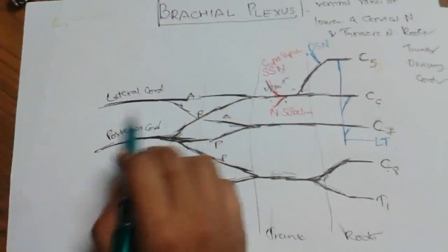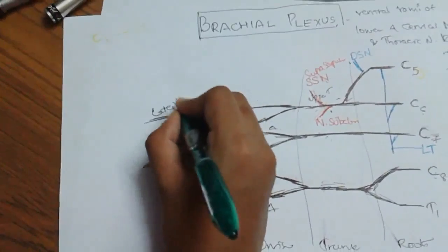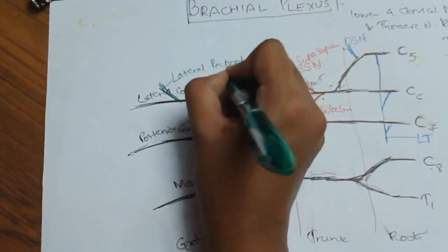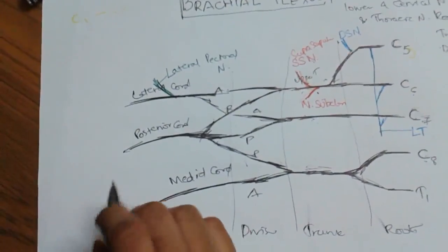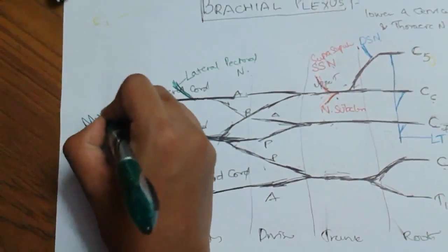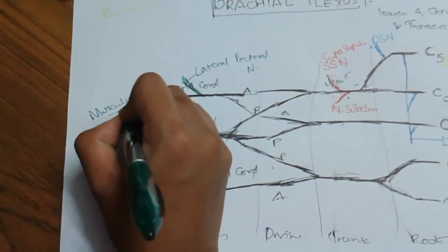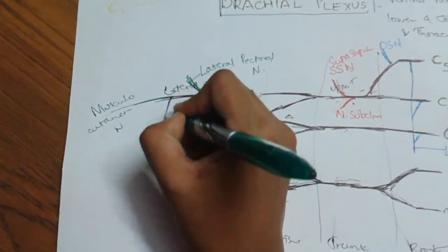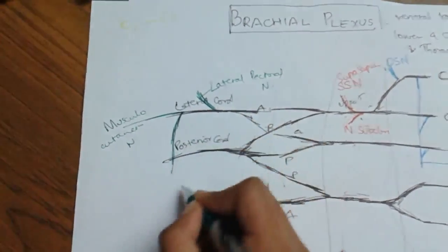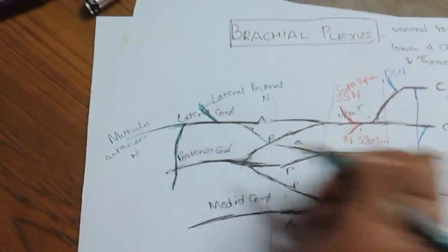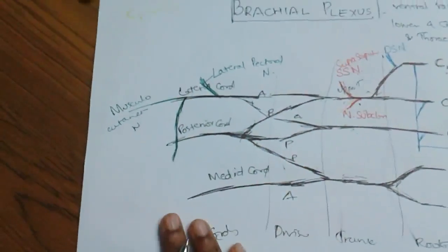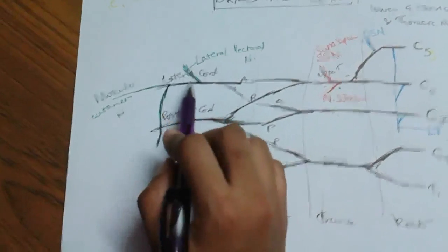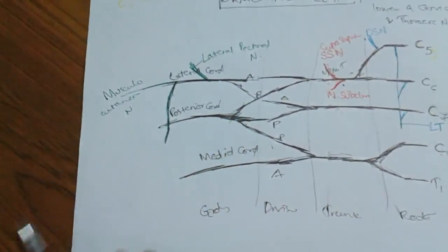From the lateral cord: the first branch is the lateral pectoral nerve. Then it continues as the musculocutaneous nerve. And it gives a branch that is the lateral root of the median nerve. So the lateral cord branches are: lateral pectoral nerve, continuation as musculocutaneous nerve, and lateral root of median nerve.